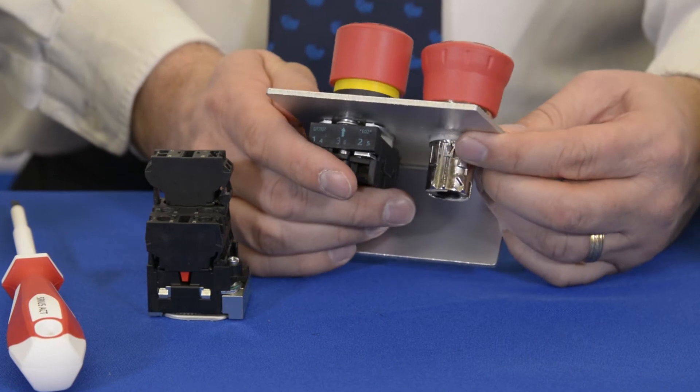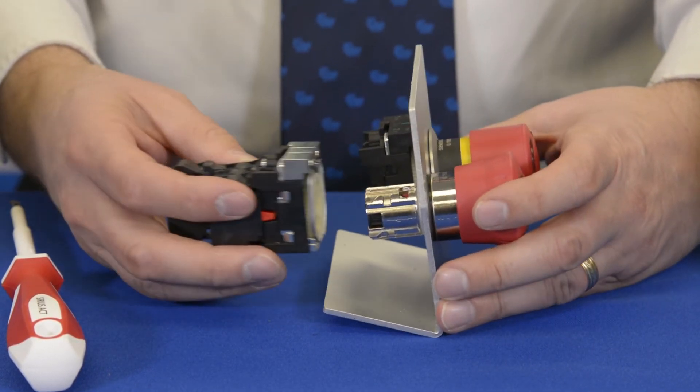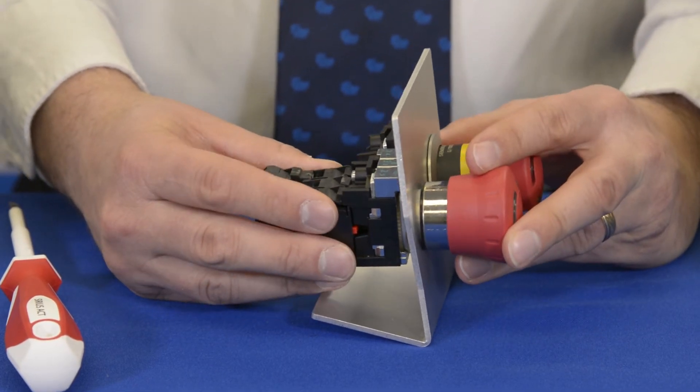We'll insert this operator through the hole. You can see the arrow is pointing through here. I line that arrow up with my arrow on my latch mechanism. When it clicks, it's in place.